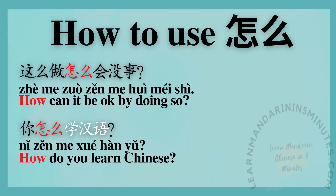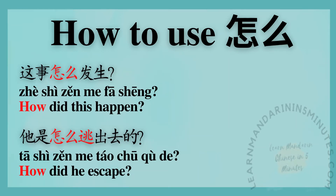你怎么学汉语? — How do you learn Chinese? 这是怎么发生? — How did this happen? 他是怎么逃出去的? — How did he escape?